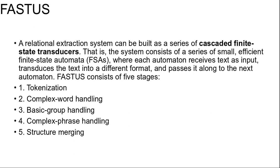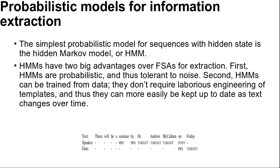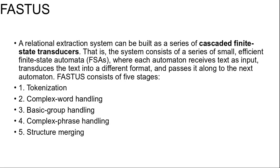The second stage handles complex words including collocations such as 'set up' and 'joint venture', as well as proper names such as 'Bridgestone Sports Company'. These are recognized by a combination of lexical entries and finite grammar rules. For example, a company name might be recognized by a rule such as a capitalized word followed by 'Company', 'Ltd', or 'Limited'.